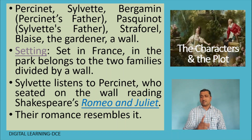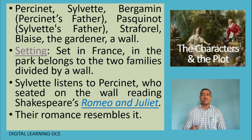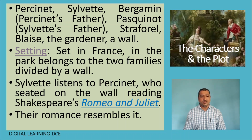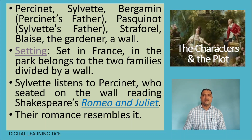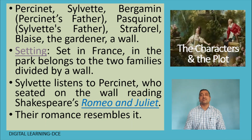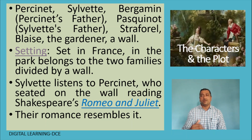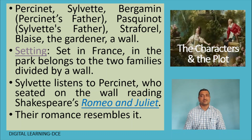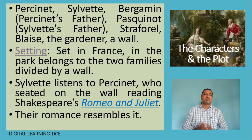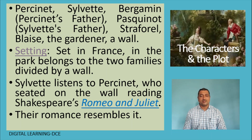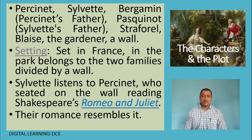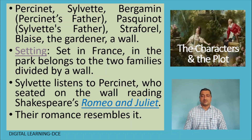There is another person brought into the play for a scene of kidnapping — that is Traffaldin. And then we have Blaise, the gardener. Another important element is the wall, which is also considered as an unspeaking character, because it acts as a kind of gap between the two families — the Bergamins and the Pasquinats.